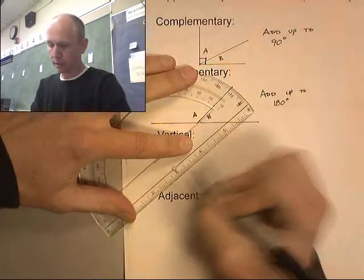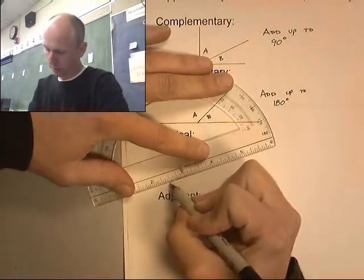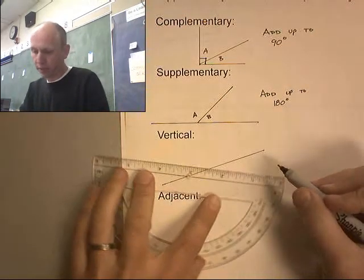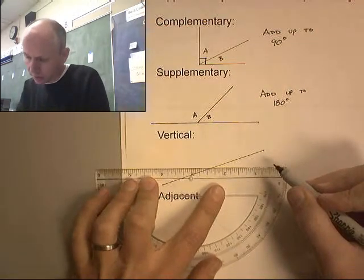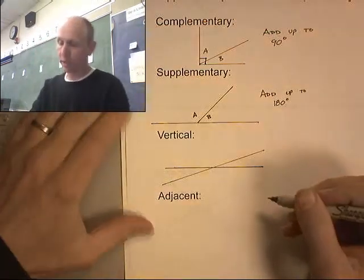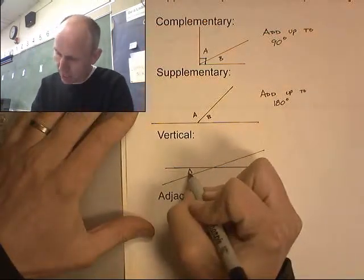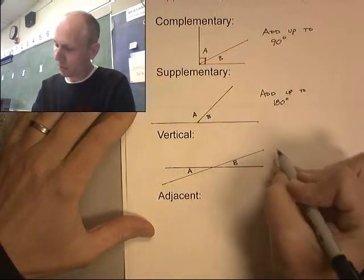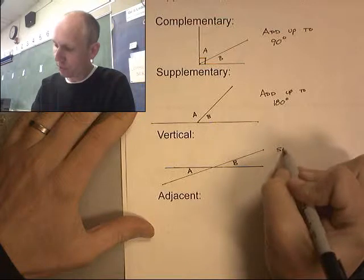Vertical angles, these are the guys that are vertical to each other, and they're congruent, so that means they have the same measurement. So there's an example of some vertical angles. So here's angle A and angle B. Those are the same vertical angles. Those guys are vertical to each other, and they have the same measurement. Vertical angles have the same measurement.